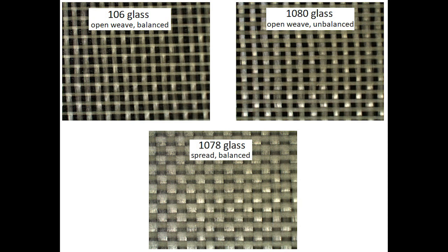Shown here are three different glass styles commonly used in the industry for millimeter wave or thin laminates. The upper left is a 106 glass style, which is considered open weave and balanced. The 1080 glass on the right is also open weave but unbalanced. Balanced and unbalanced refers to the density of glass on the x-axis compared to the y-axis. Finally, the bottom picture shows 1078 spread glass, which is also considered balanced. With spread glass there are no openings, which can be very advantageous for avoiding the glass weave effect.